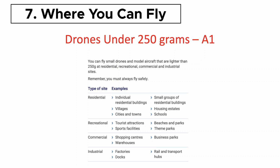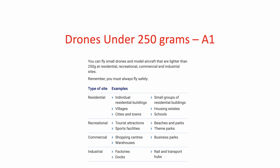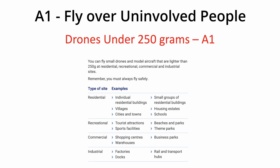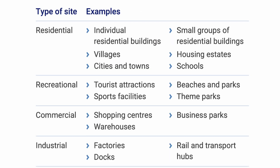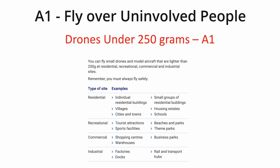Number seven: where can you fly? Good news — provided you're not in an FRZ or over a crowd, you can fly over uninvolved people with no restrictions. Drones under 250 grams — and the DJI Neo is 135 grams — fly under the A1 category. You can take off from any public land and fly over residential areas, recreational areas, beaches, parks, theme parks, commercial areas, and industrial areas, as long as there are no crowds and it's not an FRZ.